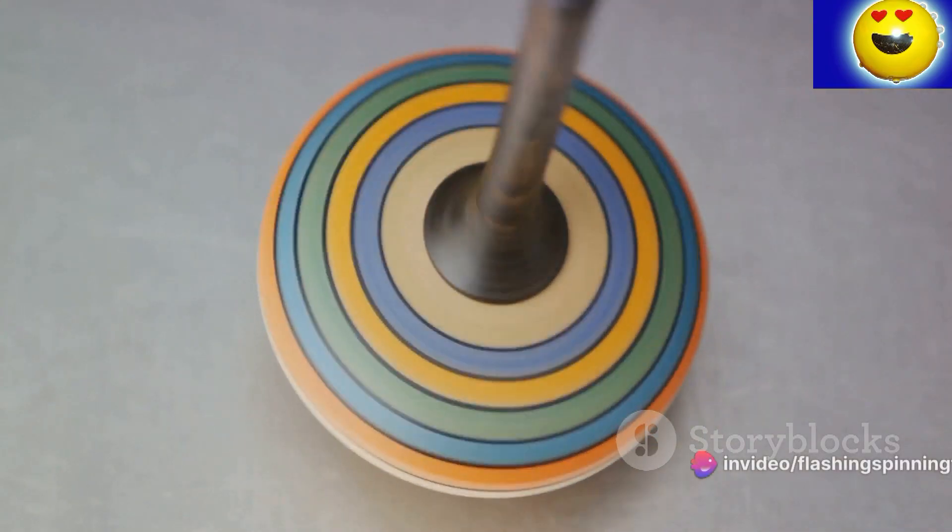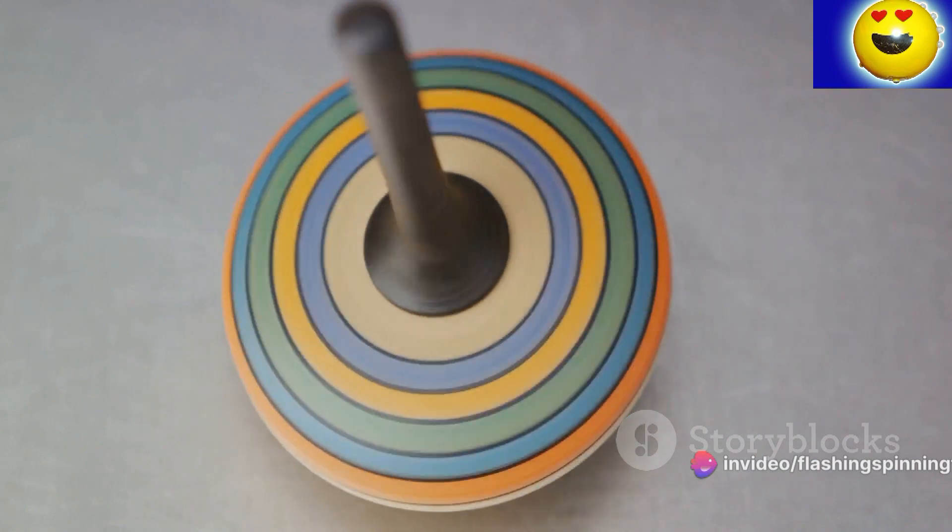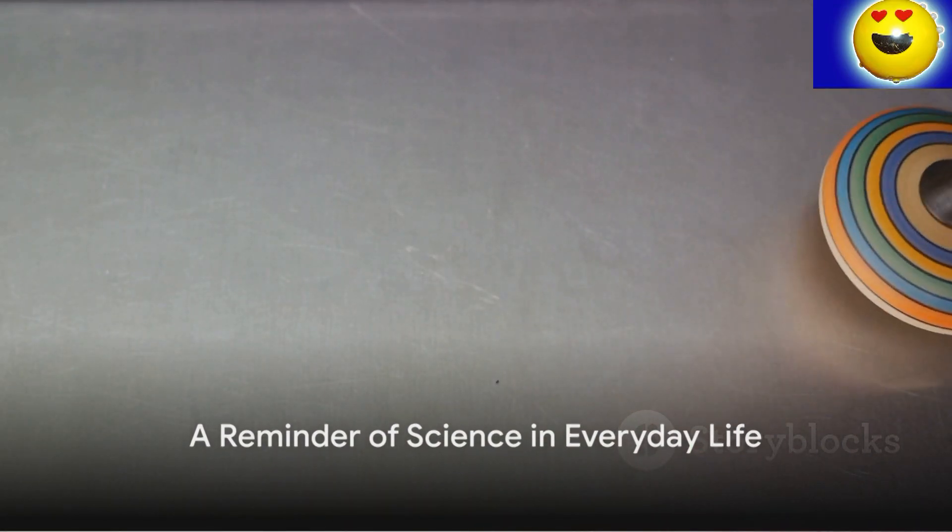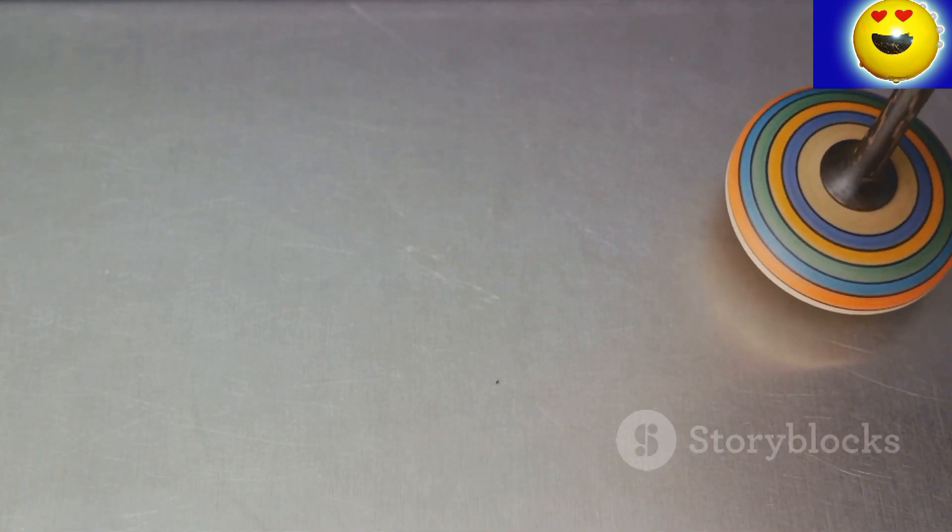As these forces negotiate, the top wobbles in a circular motion known as precession. So, the next time you see a top spinning, remember, you're not just witnessing a simple toy in action.